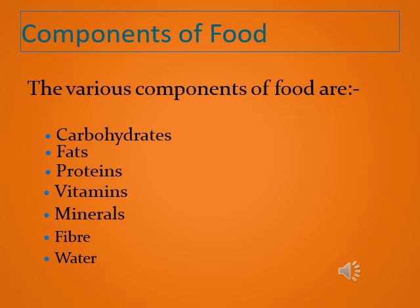The various components of food are carbohydrates, fats, proteins, vitamins, minerals, dietary fibers, and water. In this chapter, we will learn about these components — their sources, their functions, and also test their presence in a particular food item.